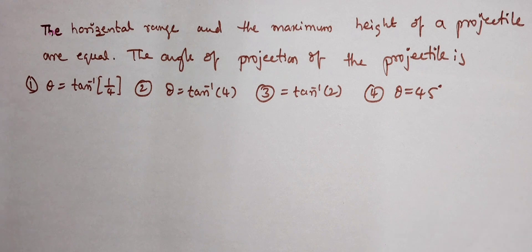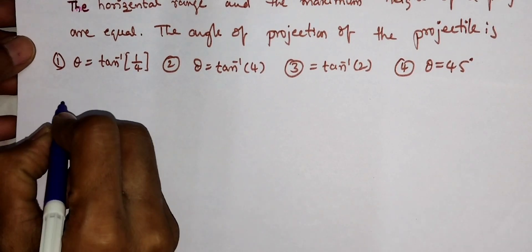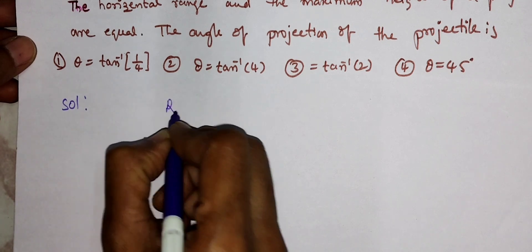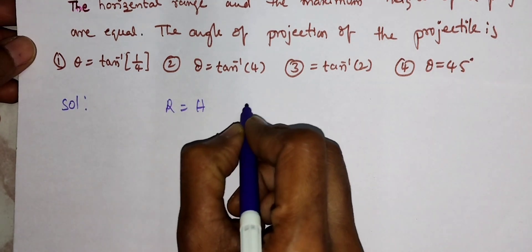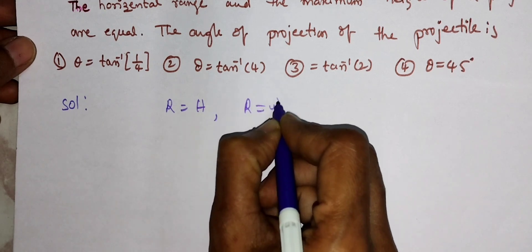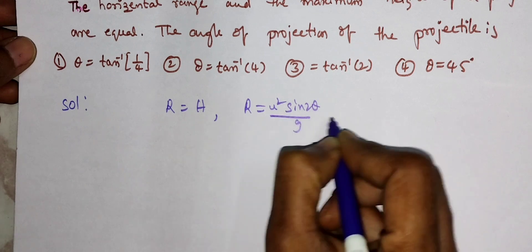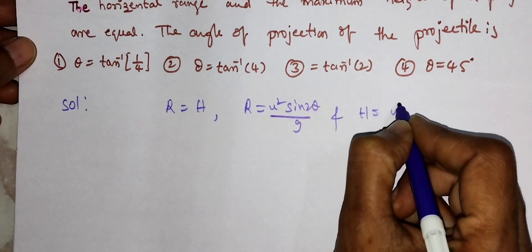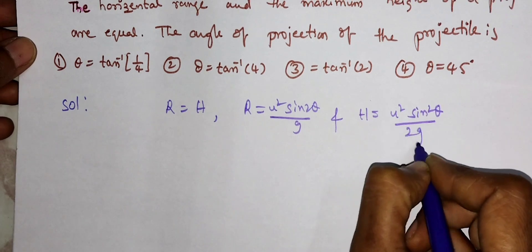So let us solve the problem. For projectile, the given data is R is equal to H, that is horizontal range is equal to maximum height. We have the formulas: R is equal to u squared sin 2 theta by g, and maximum height is equal to u squared sin squared theta by 2g.